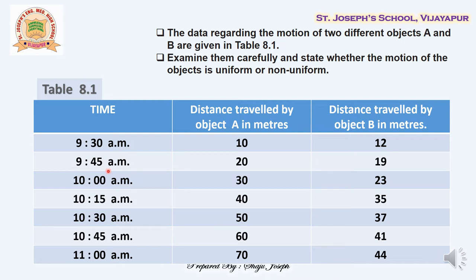In these 15 minutes, the distance traveled by A is 20 meters — earlier it was 10, now it is 20, so the difference is 10 meters. For object B, it was at 12 meters and now it is at 19 meters, so the distance traveled is 7 meters. And so on.